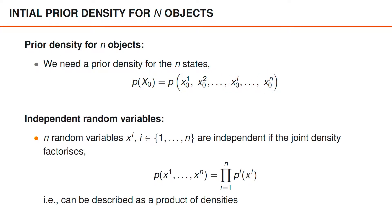We're going to model this initial prior using an independence assumption. So we need to quickly remind ourselves of what independent random variables mean. If we have n random variables xi, then they're independent if their joint density factorizes, meaning that we can describe the joint density as a product of densities for each individual variable, just like we've done here.